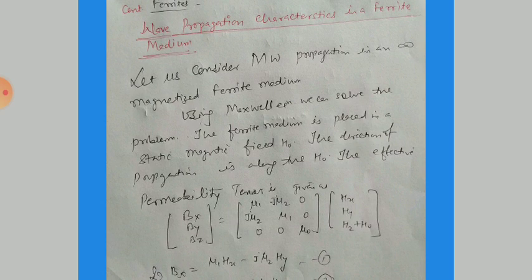The direction of propagation is along H₀. The effective permeability tensor, as we have calculated earlier, is given as: [Bx, By, Bz] = [μ₁, −jμ₂, 0; jμ₂, μ₁, 0; 0, 0, μ₀] times [hx, hy, hz + H₀]. Because the external magnetic field is along the z-axis, the magnetic field along z is hz + H₀.